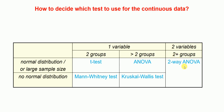To summarize the decision framework: for normally distributed data or large sample size (n ≥ 10) — two groups, one variable: t-test; one variable, more than two groups: one-way ANOVA; two variables, more than two groups: two-way ANOVA. For non-normally distributed data — one variable, two groups: Mann-Whitney test; one variable, more than two groups: Kruskal-Wallis test.